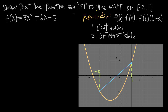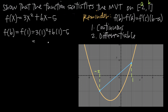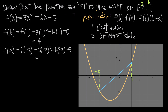For f(b): the interval is [a, b], so a = -2 and b = 1. Therefore f(b) = f(1) = 3(1)² + 6(1) - 5 = 3 + 6 - 5 = 4. For f(a): f(-2) = 3(-2)² + 6(-2) - 5 = 3(4) - 12 - 5 = 12 - 12 - 5 = -5.